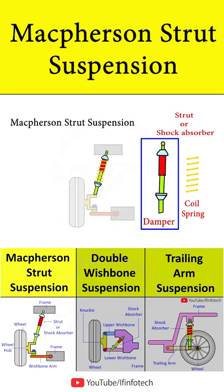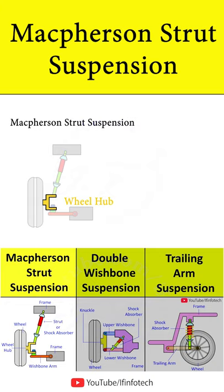The wishbone provides bottom mounting for the wheel hub. The upper part of the hub is rigidly fixed to the inner part of the strut. The wishbone is hinged to the cross member and resists accelerating, braking, and side forces.